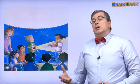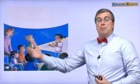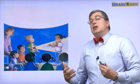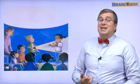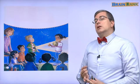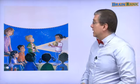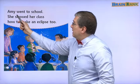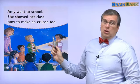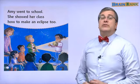So, Amy learns how to make an eclipse from her mom and dad. She learns about solar eclipse, right? And she learns about lunar eclipse. Right? What does she do? Amy went to school. Right? She went to school.